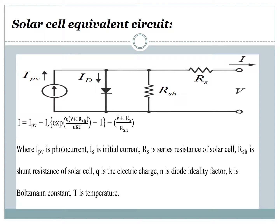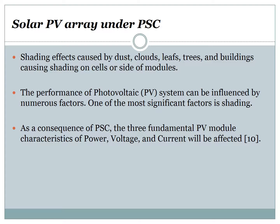For the solar cell equivalent circuit, there are many parameters including: the photon current I, the diode saturation current under series resistance, shunt resistance, Q which is the electrical charge, N which is the diode ideality factor, K the Boltzmann constant, and the last parameter which is the temperature.